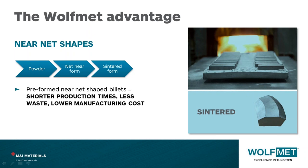We've shown how by reducing a preform to near-net shapes it's possible to produce a sintered form containing the minimum amount of machining stock. This near-net shape delivers reduced manufacturing costs through reduced waste and shorter machining times. Next we're going to show you how to maximize these efficiencies by passing the sintered form directly into a state-of-the-art machine shop set up specifically for the machining of tungsten alloy.